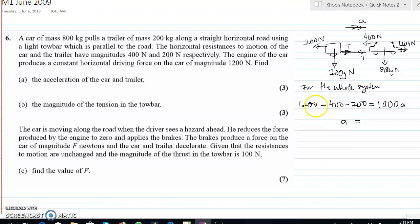Simplify. So 1200 minus 200 will be 1000 minus 400 is 600. So that would be 6 over 10 or 3 over 5 meter per second squared. So that's for the first part.